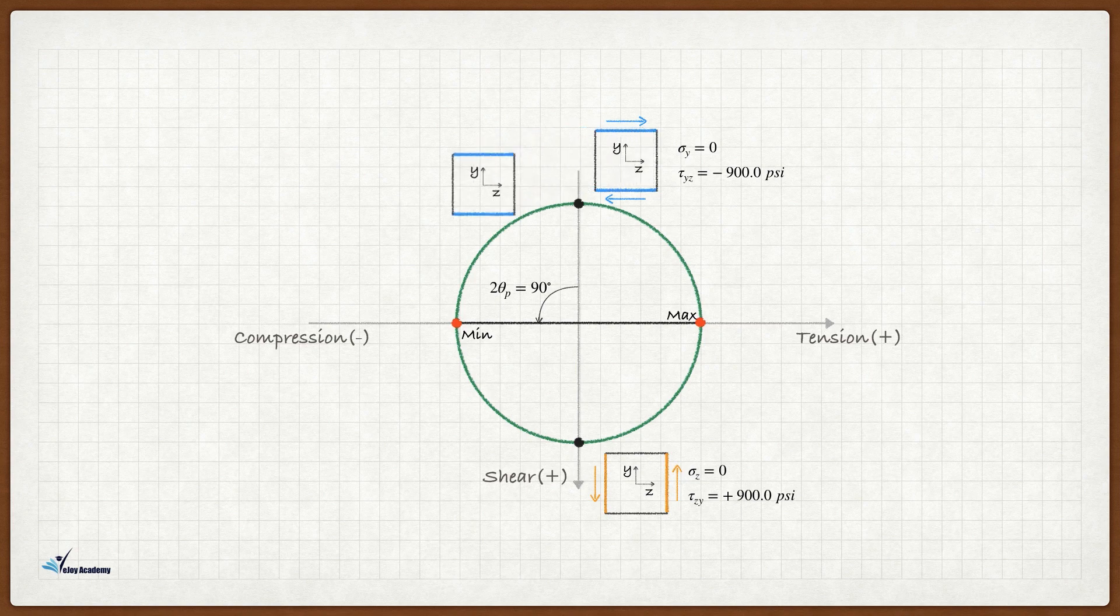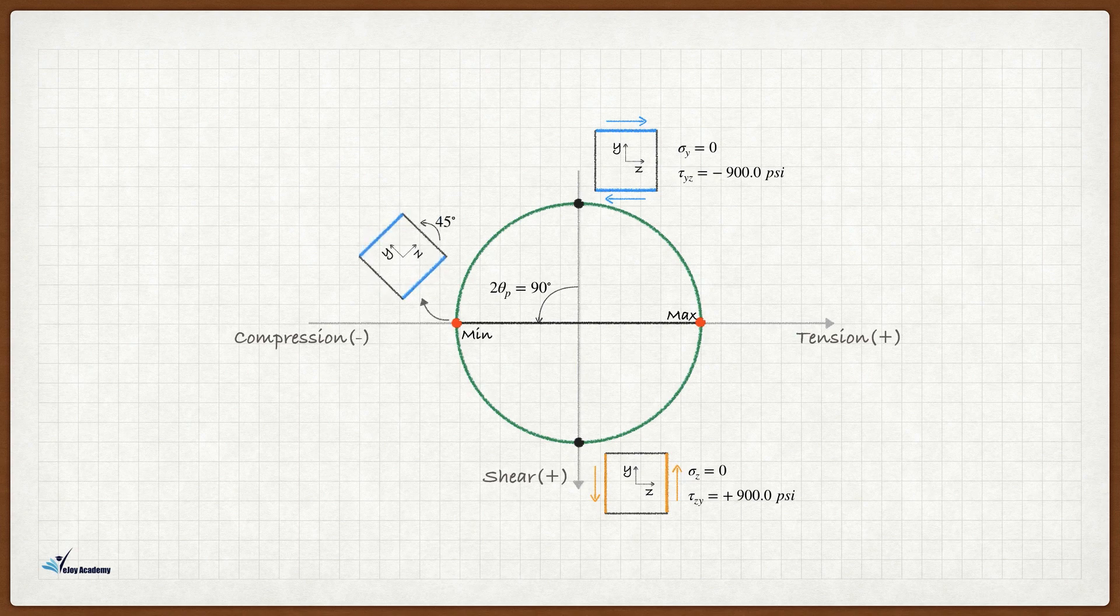If we rotate the stress block associated with the negative 900 psi shear stress by 45 degrees counterclockwise, we get a new stress block with compressive stress of 900 psi.